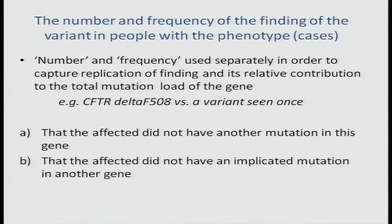Number and frequency here are used separately to get at the idea that you want to consider replication of findings and the contribution to the total mutational load. You would contrast things seen again and again in patients with a clearly defined phenotype — as in the Delta F508 mutation — as opposed to a variant that is only seen once.